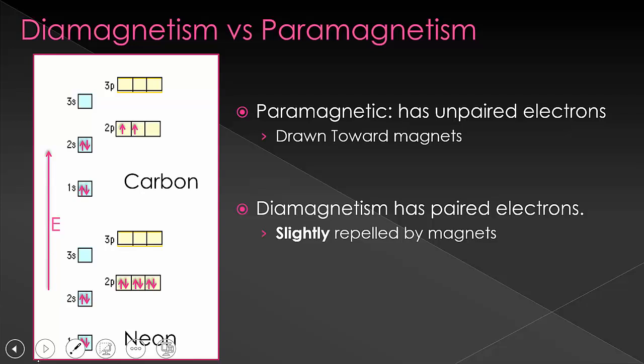Atoms that have unpaired electrons have different properties than those that have paired electrons. We define those with unpaired electrons as paramagnetic and those with paired electrons as diamagnetic. So when we get into making these diagrams, whenever you have unpaired electrons those are paramagnetic, and paired electrons are diamagnetic.